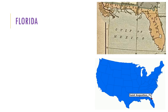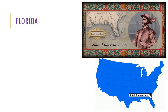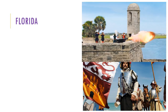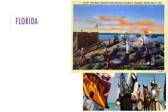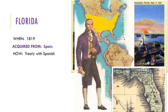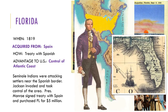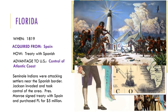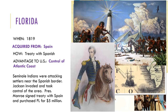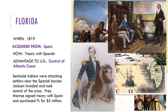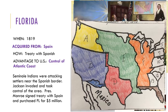The next territory the United States gained was Florida. Florida had been claimed by Spain even before Jamestown. St. Augustine is the first permanent settlement in North America, settled by the Spanish in 1565. It remained under the possession of Spain until 1819, through a treaty between the U.S. and Spain when James Monroe was president. Acquiring Florida was a big advantage because now we had total control of the Atlantic coast. Monroe obtained Florida because Seminole Indians living in Florida had begun to attack settlers near the Spanish border. A U.S. military leader named Andrew Jackson invaded and took control of the area, after which President Monroe signed the treaty with Spain and purchased Florida for five million dollars.